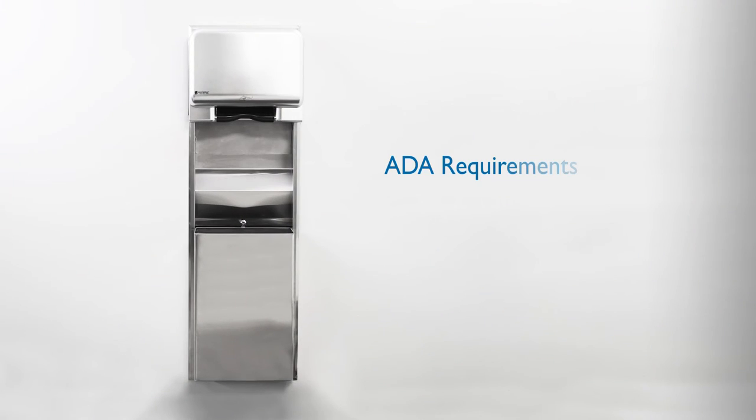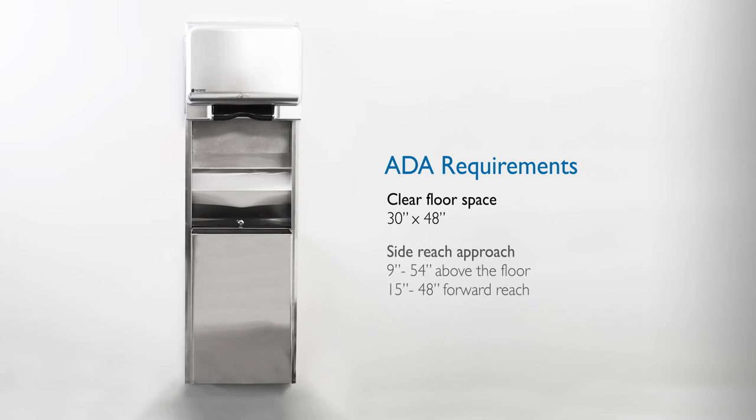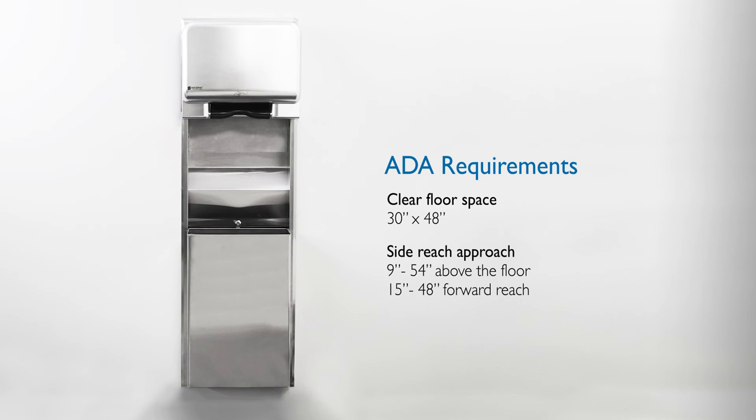The ADA requires that there be clear floor space for approaching the paper towel dispenser measuring 30 inches by 48 inches. For ADA dispensers intended for a side reach approach, the towel dispenser shall be mounted between 9 and 54 inches above the floor and 15 and 48 inches for a forward reach.